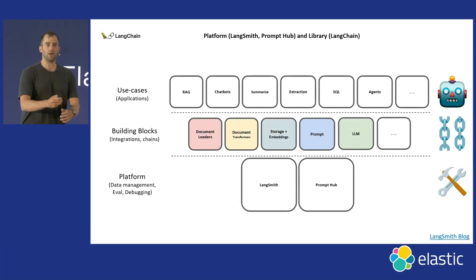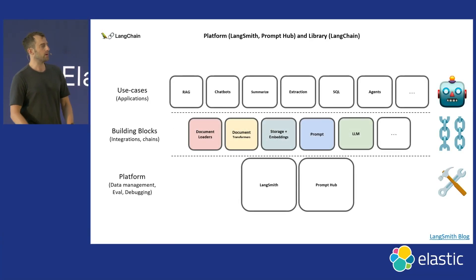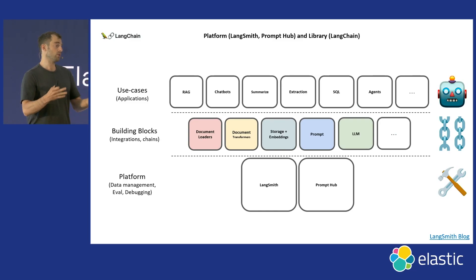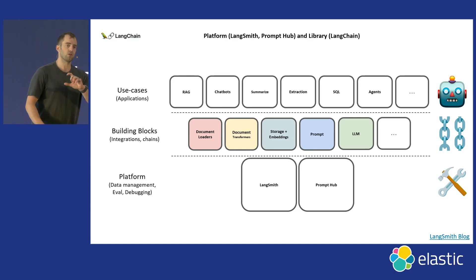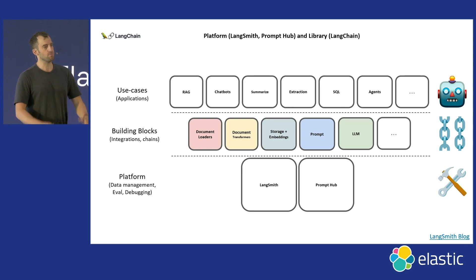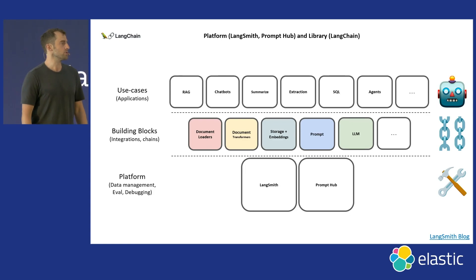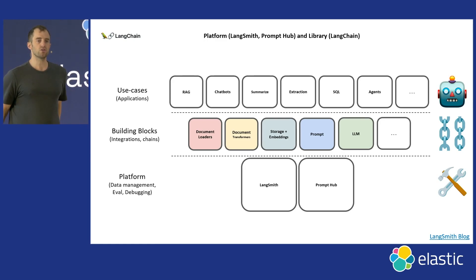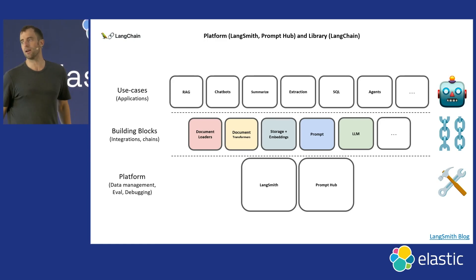You can think about it as a three-layer cake. At the bottom you have our platform, which has LangSmith — our observability platform — and also a Prompt Hub. In the middle is our very popular open source library, which has many different components for building LLM applications. On the top are things you can build with these components — different use cases like summarization and RAG.